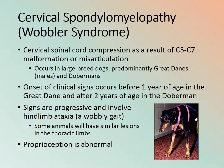Wobbler's syndrome, also called cervical spondylomyelopathy, is cervical spinal cord compression resulting from C5–C7 malformation — the fifth to seventh cervical vertebrae are malformed or misarticulated, compressing the spinal cord. It occurs predominantly in large breed dogs, especially Great Danes and Dobermans. Onset of clinical signs is usually before one year of age in the Great Dane and after two years of age in the Doberman.